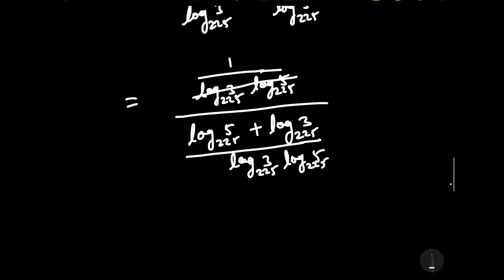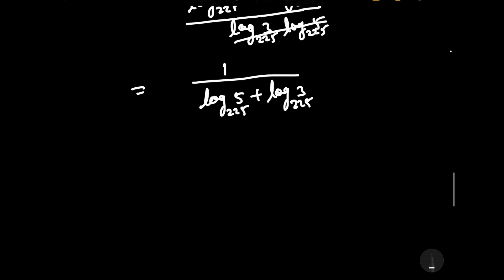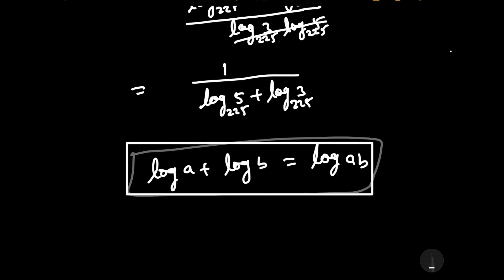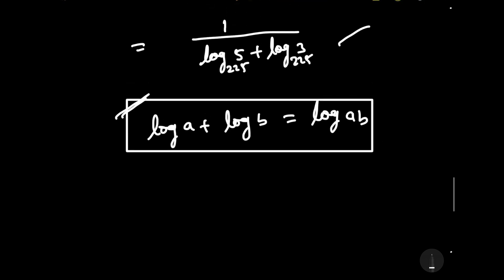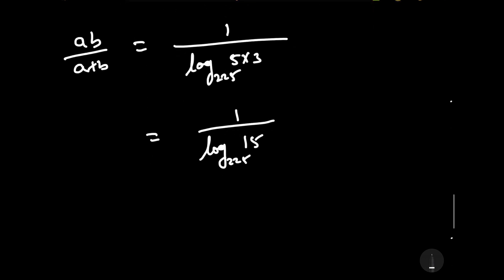The common terms in the numerator and denominator cancel out, giving us 1 upon log base 225 of 5 plus log base 225 of 3. Using the property that log a plus log b equals log of a times b, this becomes 1 upon log base 225 of 5 times 3, which is 1 upon log base 225 of 15.